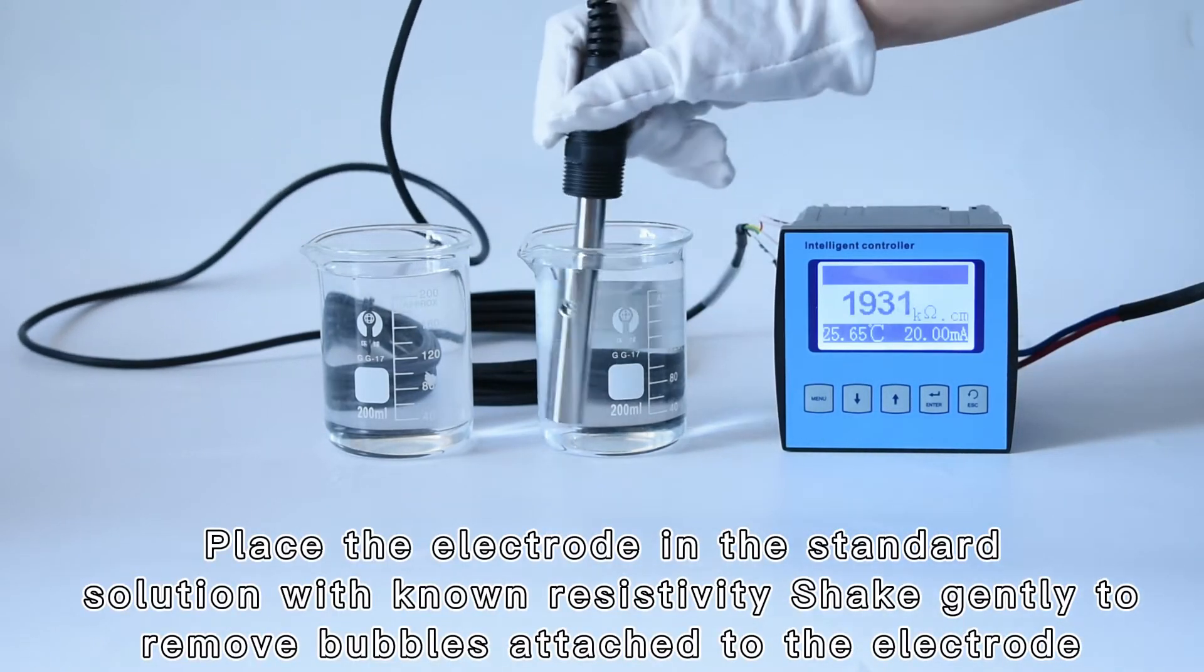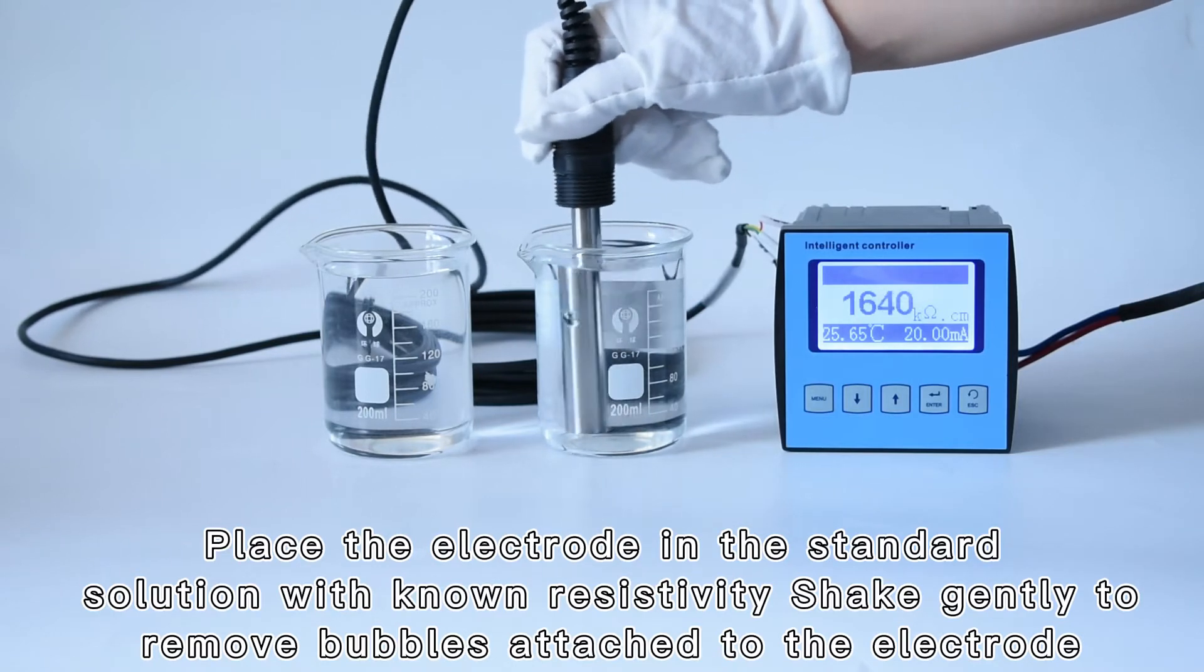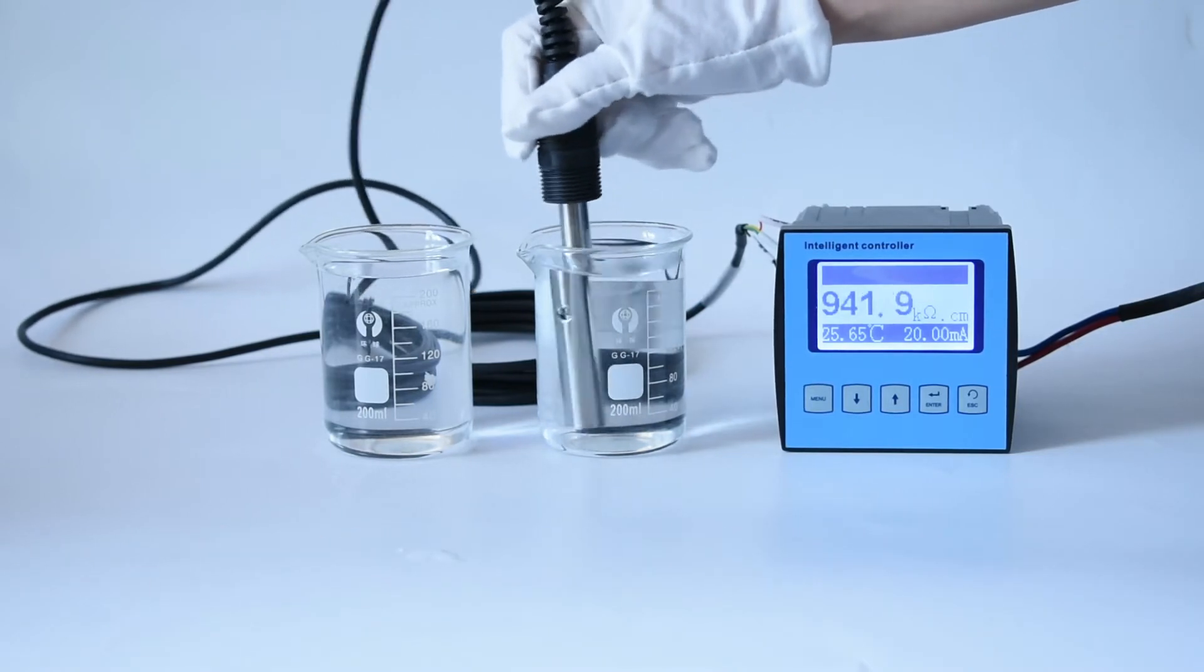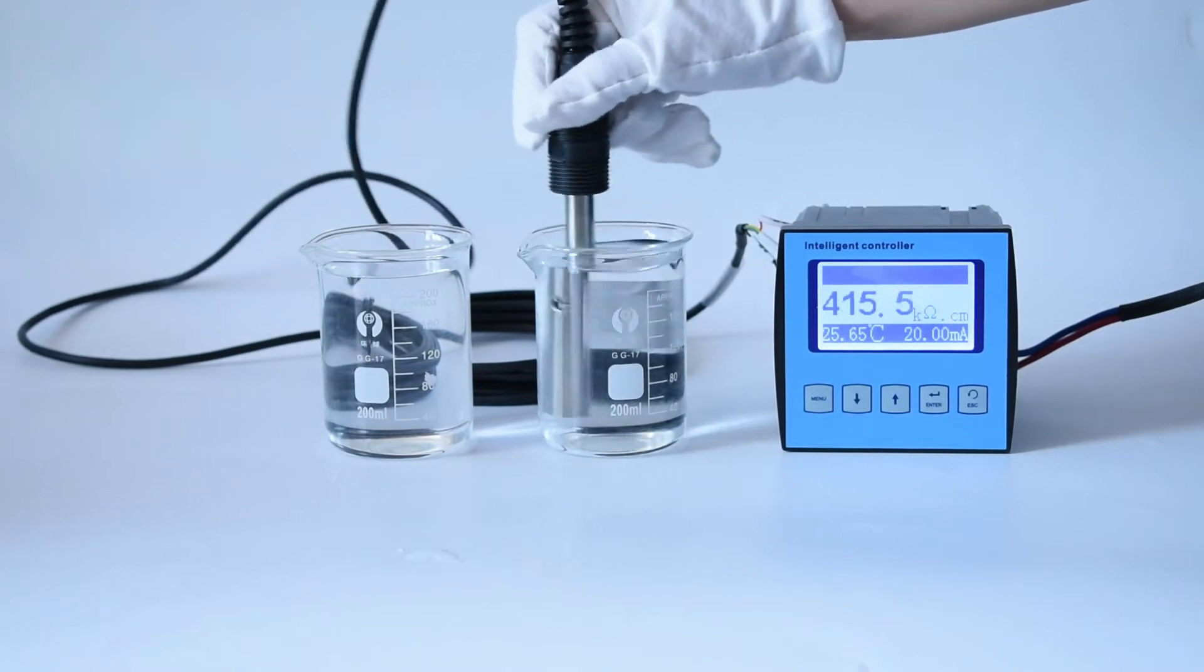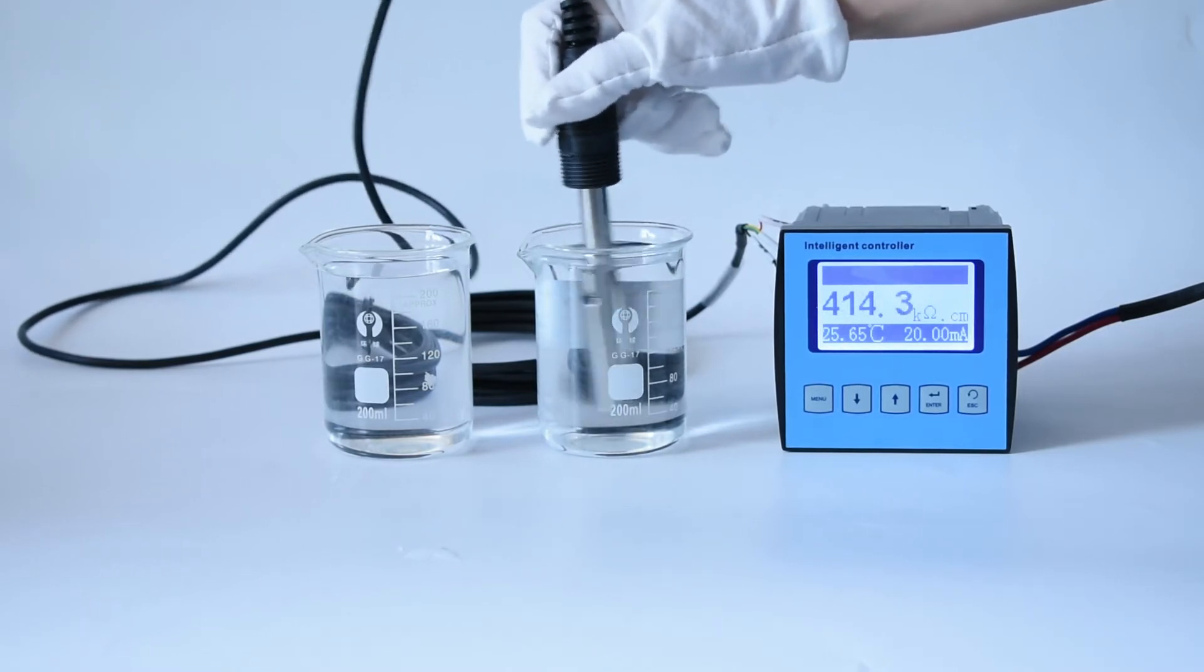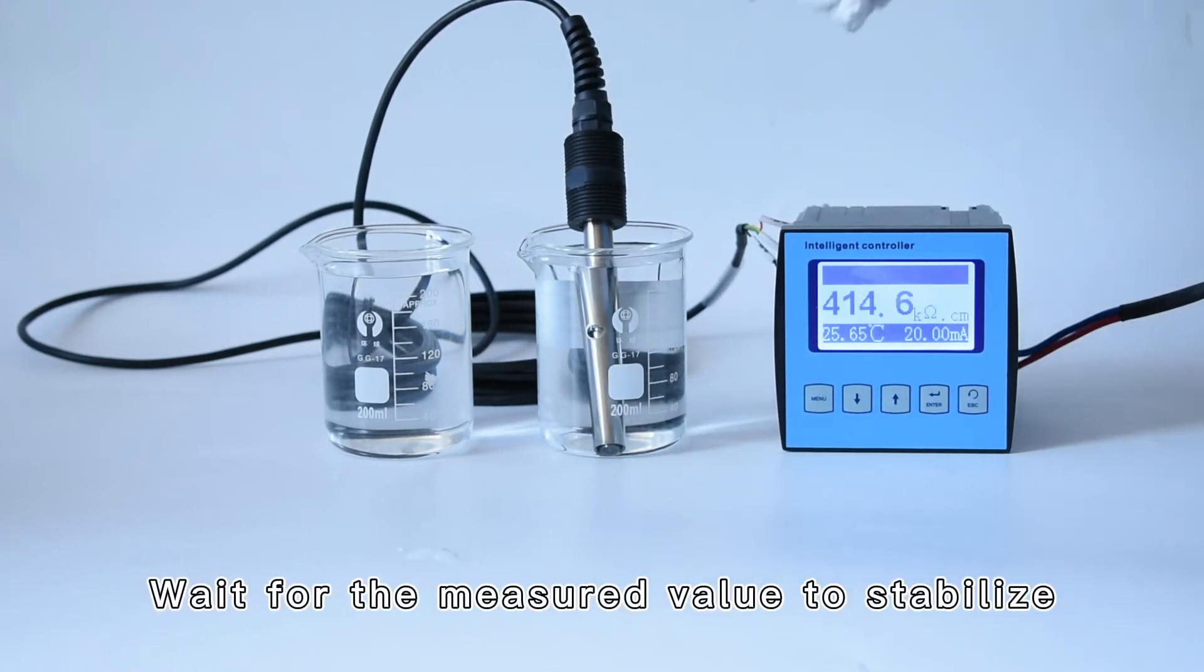Place the electrode in the standard solution with known resistivity. Shake gently to remove bubbles attached to the electrode. Wait for the measured value to stabilize.